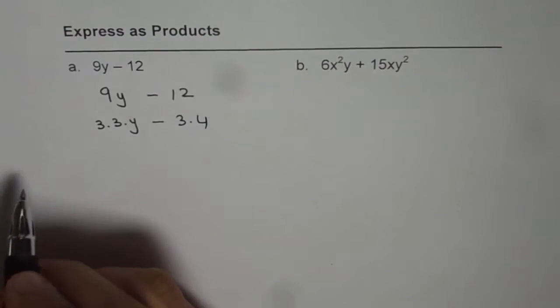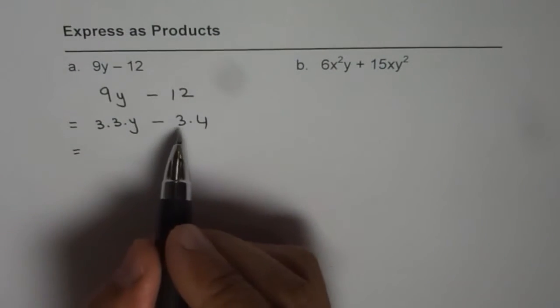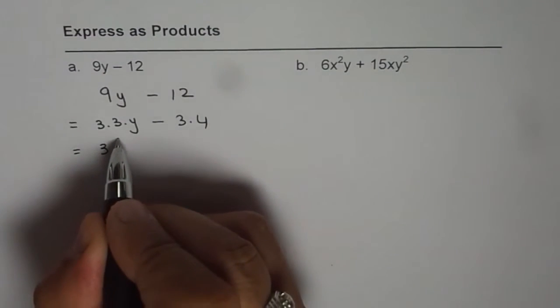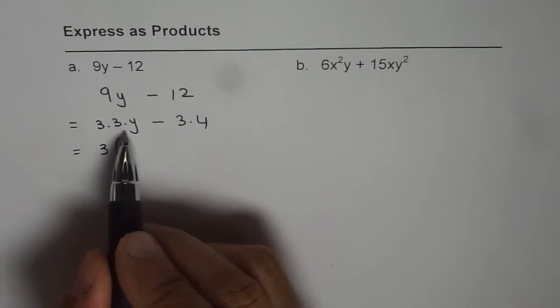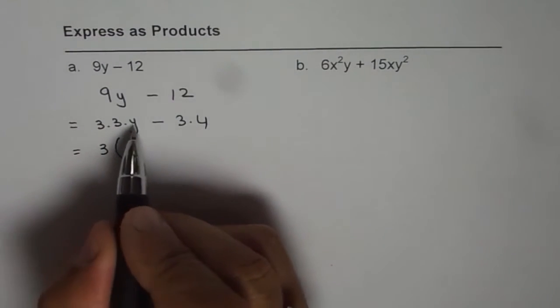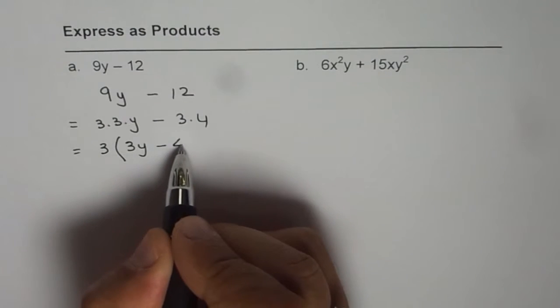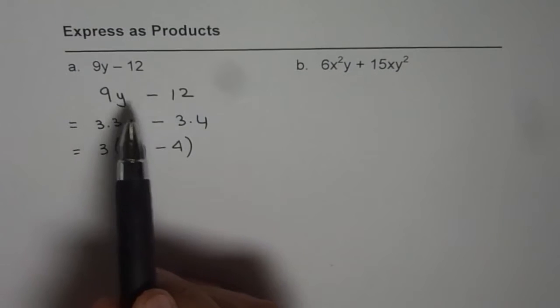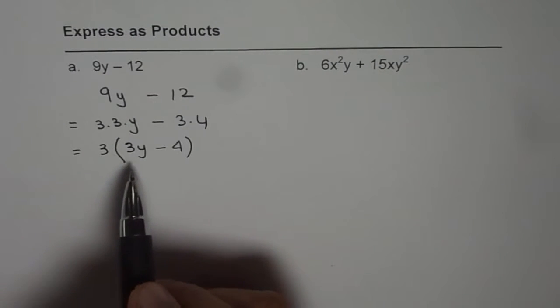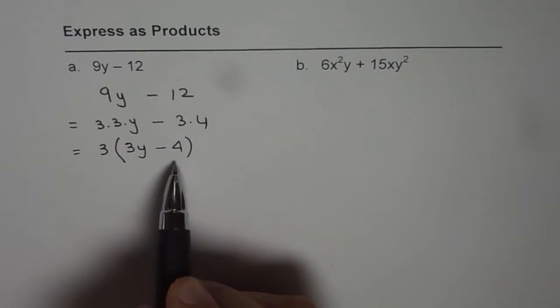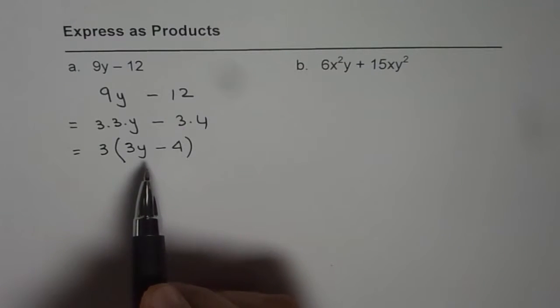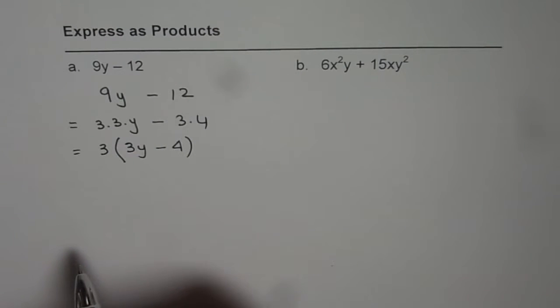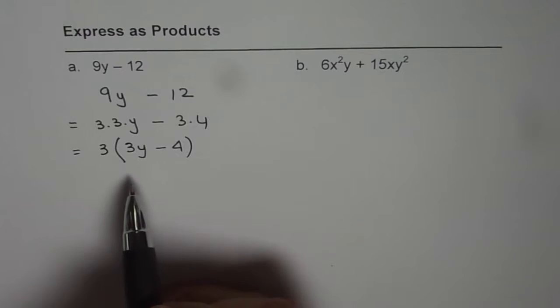From here you can see that 3 is a common factor between the two terms. We can take 3 as a common factor, and within the brackets we are left with 3y minus 4. So we have written this difference 9y minus 12 as 3 times (3y minus 4), which is the product form. That is how we express a difference of terms as a product of terms. This is also called factorization.